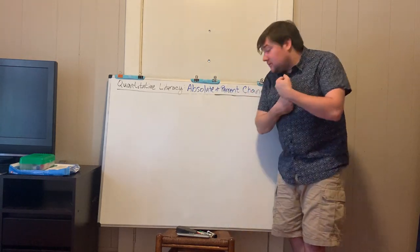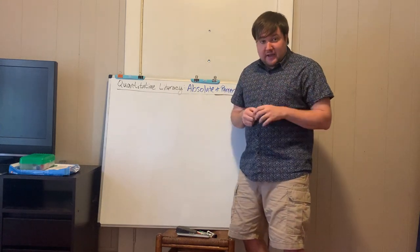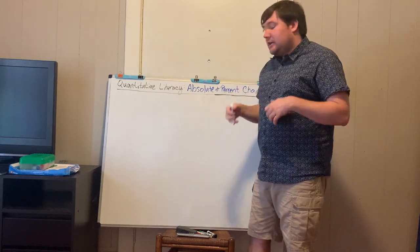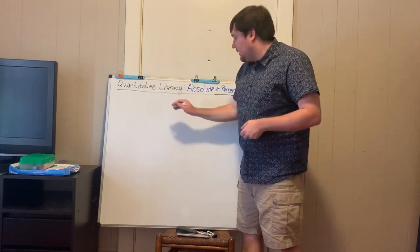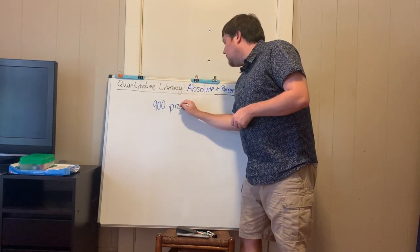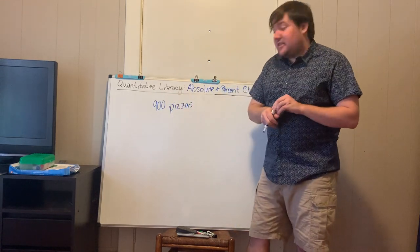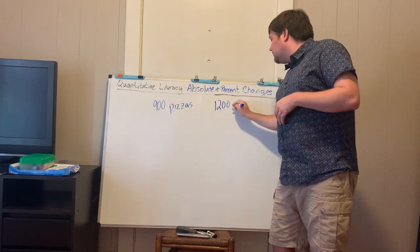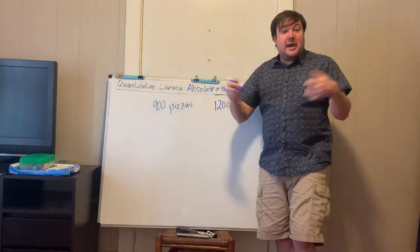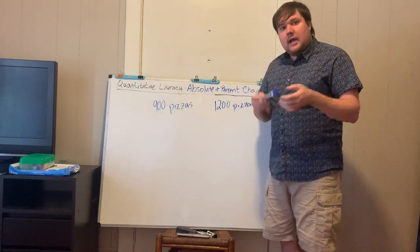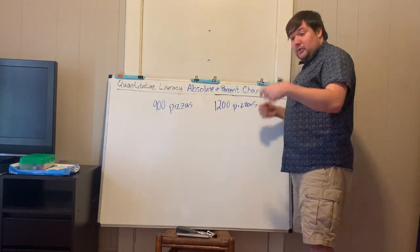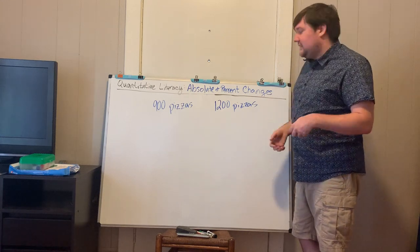So let's go ahead and absolute and percent change, how to find it. Let's say, for example, we're running a pizza shop, and over the course of one week, we sell 900 pizzas. And then the next week, we sell 1200 pizzas. And we want to know how much better did we do? Absolute and percent changes are two ways in which we identify how much better we did.